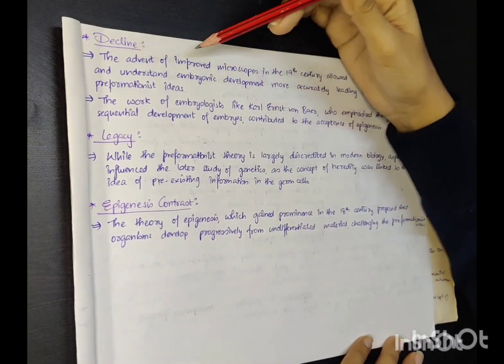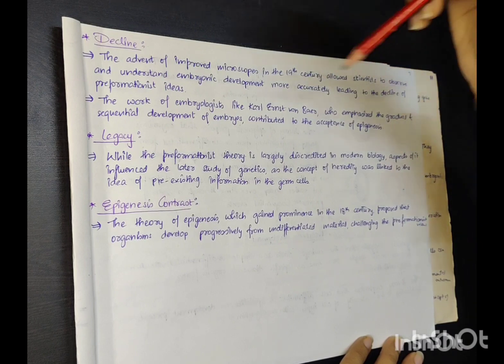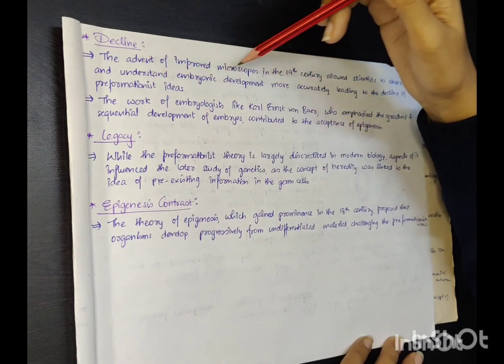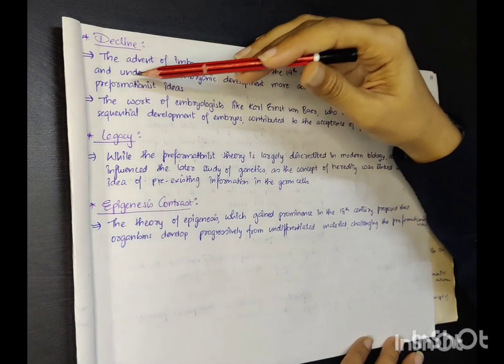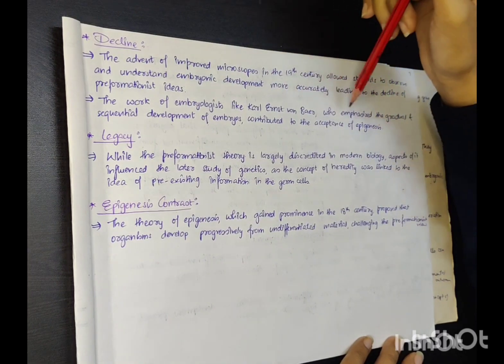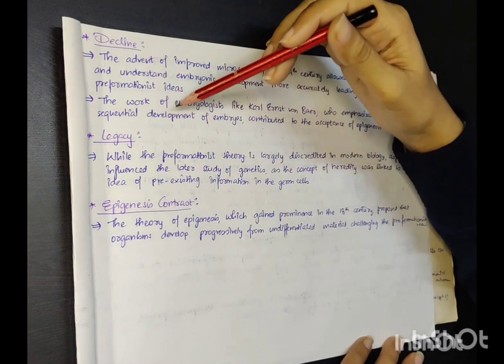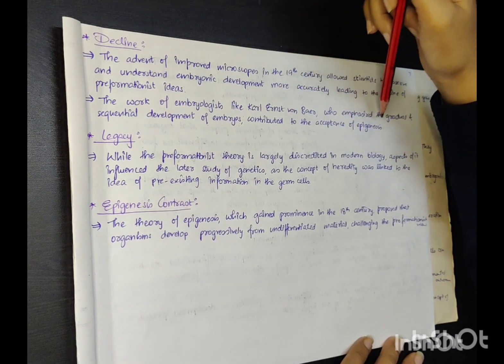Decline: The advent of improved microscopes in the 19th century allowed scientists to observe and understand embryonic development more accurately, leading to the decline of pre-formationist ideas. The work of embryologists like Karl Ernst von Baer, who emphasized the gradual and sequential development of embryos, contributed to the acceptance of epigenesis.